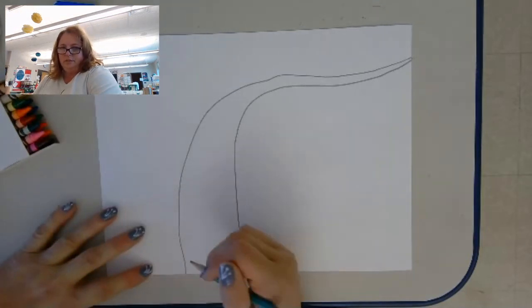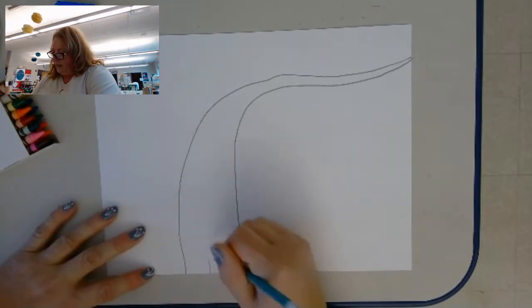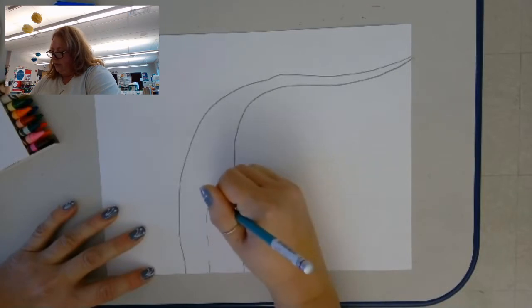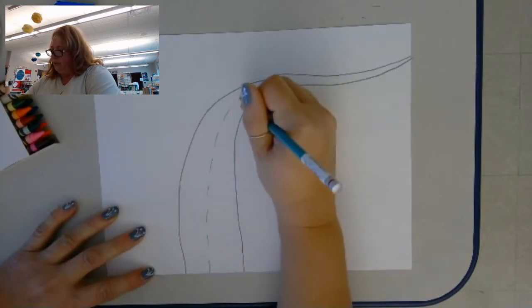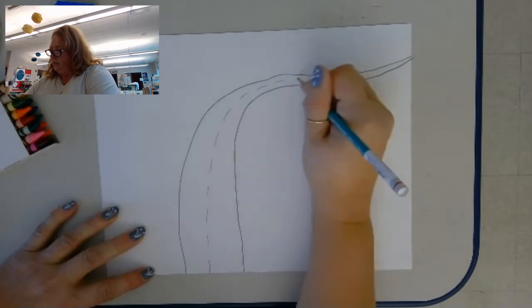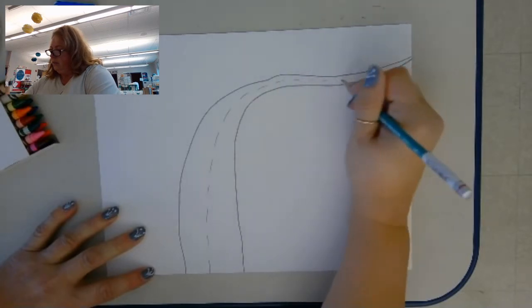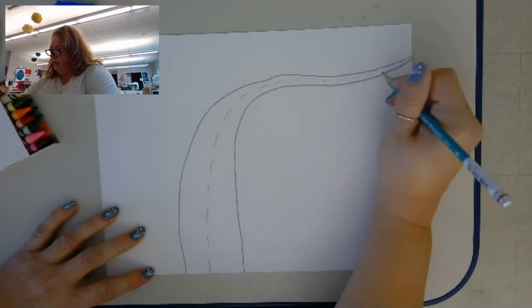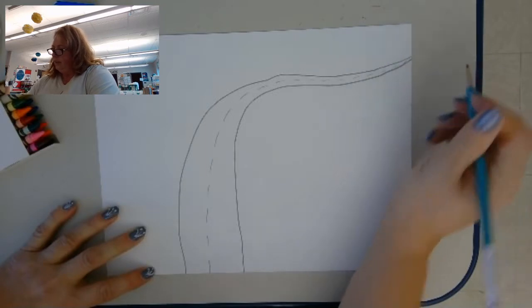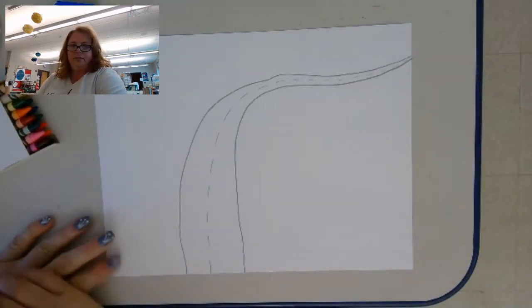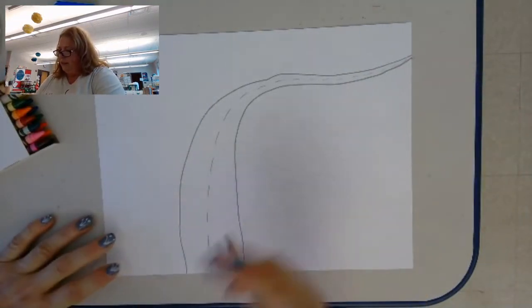And then I'm going to do a dotted line in the middle so that it looks like a road. And even the lines should get smaller the further you go, so they start off kind of big and then they get smaller.